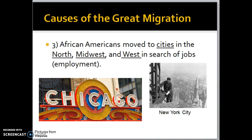Think back to those Jim Crow laws — laws that say you can only go here if you're Black and here if you're white, with separate water fountains and separate restaurants. African Americans, in many cases, are sick of this; they're ready to be equal. If you remember W.E.B. Du Bois and Booker T. Washington, they were working towards that equality and ending segregation. Now, about 40 to 50 years after the Civil War, people are ready for change and they're not seeing it.